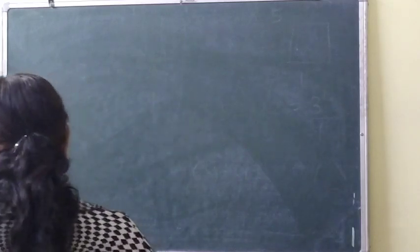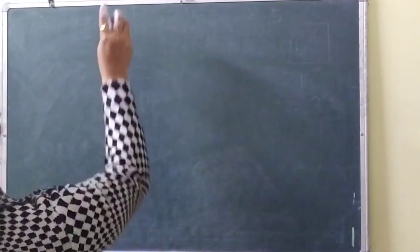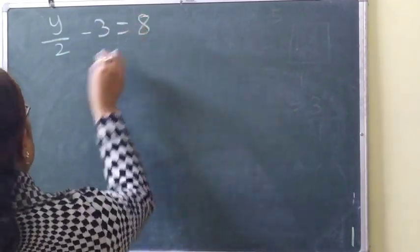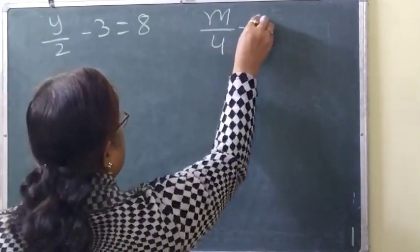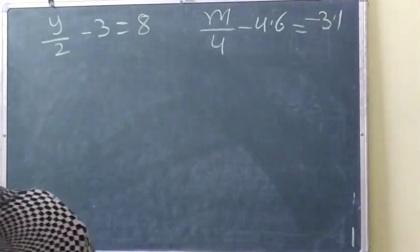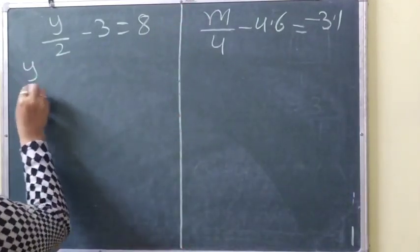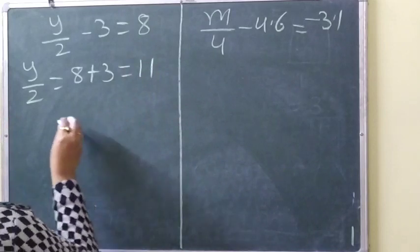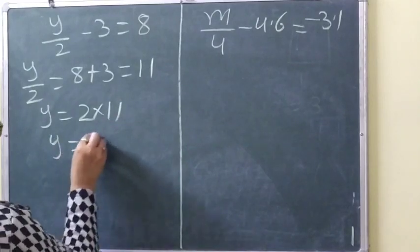Next questions: y by 2 minus 3 equals 8, and m by 4 minus 4.6 equals minus 3.1. For y by 2 minus 3 equals 8: y by 2 equals 8 plus 3, which is 11. Then y equals 2 multiplied by 11, so y equals 22.